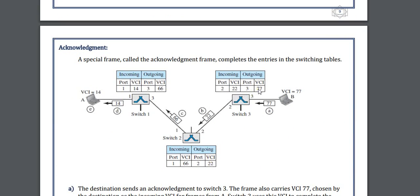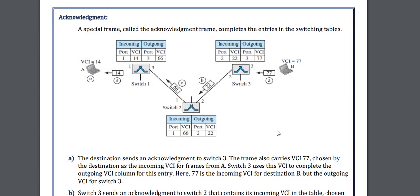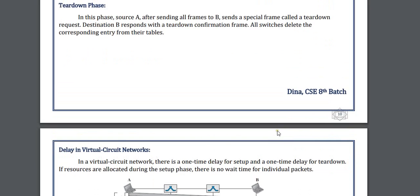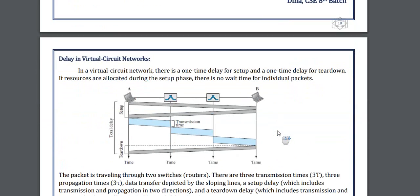The VCI acknowledgement values are 66, 22, and 77. Teardown phase is the final level where we need to tear down the function. In the delay of virtual circuit, first we need to set up a connection — here is the setup delay — then transmit data from one switch to another. Since the path was set up first, there is no delay in transmission time. After that the teardown signal takes some time, known as teardown delay. The total delay from setup to teardown is known as the total delay in virtual circuit networks.